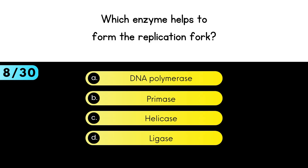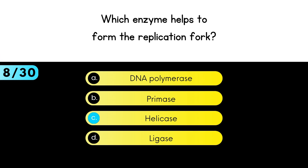Which enzyme helps to form the replication fork? Helicase separates the strands to form the replication fork.